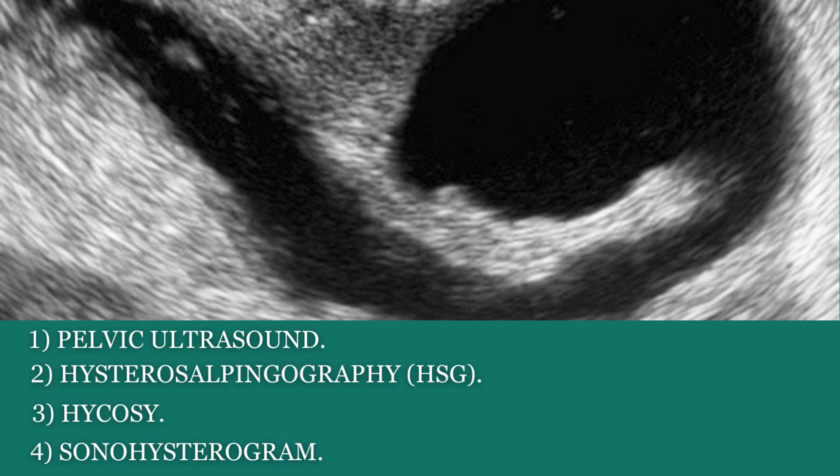You can also do what we call an HSG — hysterosalpingogram. Dye is injected and it will show that the tubes are dilated and full of fluid. Another test is HyCoSy, which stands for hysterosalpingo-contrast sonography. You can also do a sonohysterogram. These are the four basic tests you can do before any surgery to find out whether you have hydrosalpinx.